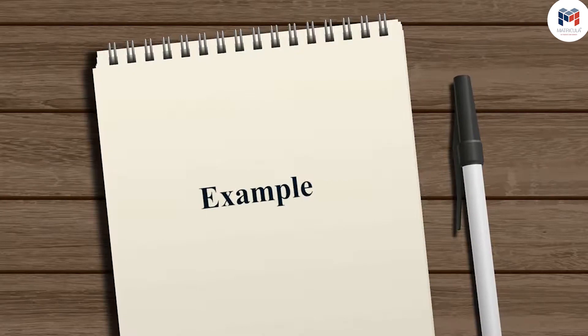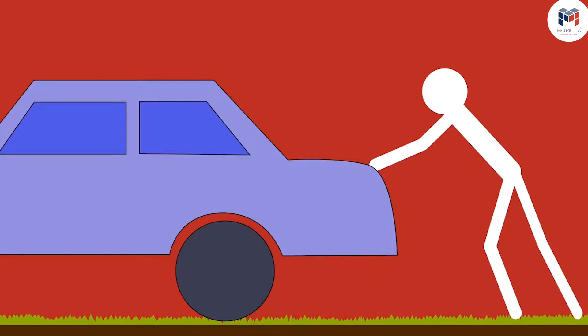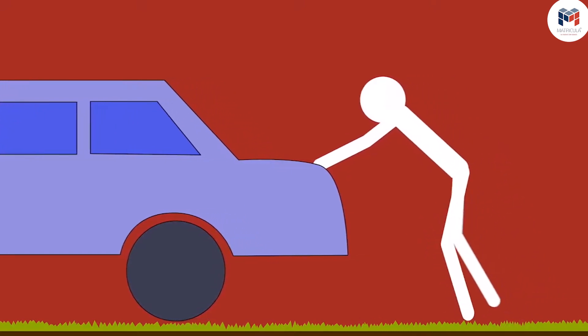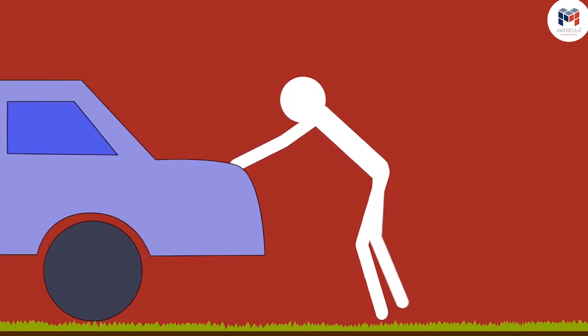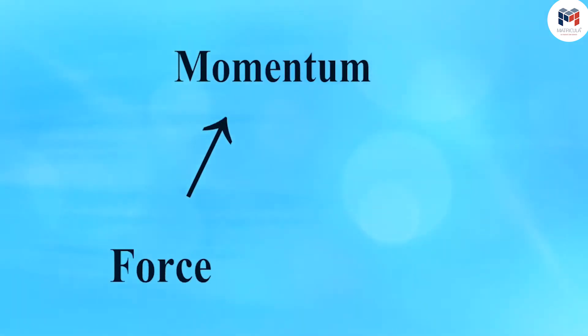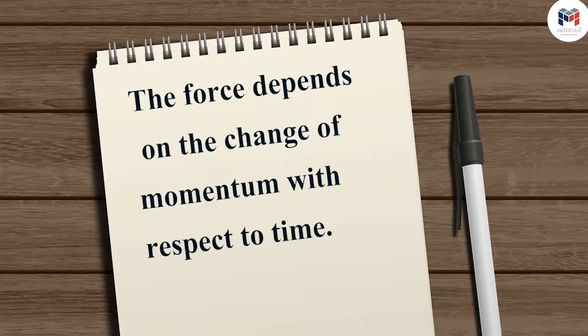Now, let us consider an example of pushing a car. When a person gives a sudden push to the car, it hardly moves. But if the person continues pushing for some time, the car may gradually gain some acceleration and start to move. This shows the change in momentum of a body does not only depend on the force, but also depends on the time for which the force is applied.